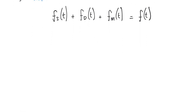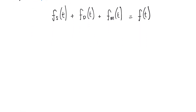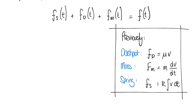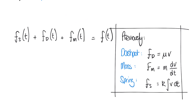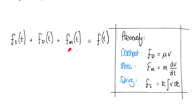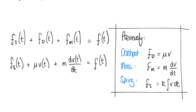We'll do this by revisiting the describing equations for mechanical systems outlined in a previous video. For a dashpot, FD equals μV. For a mass, FM equals M times dV/dt. And for a spring, FS equals K multiplied by the integral of V with respect to time. Let's apply these to replace FD and FM in our equation.